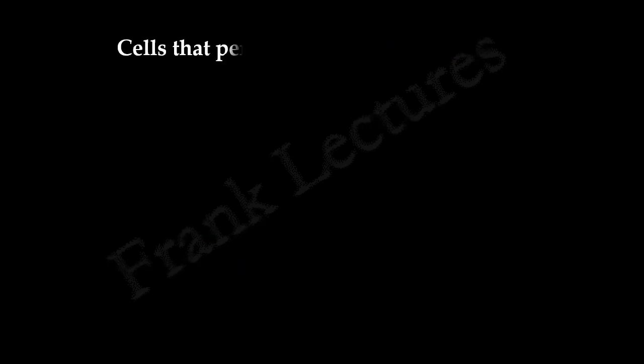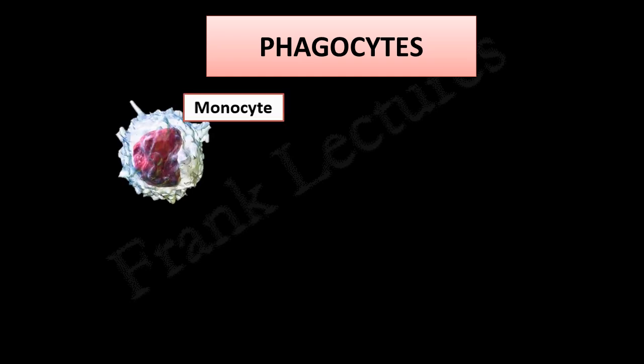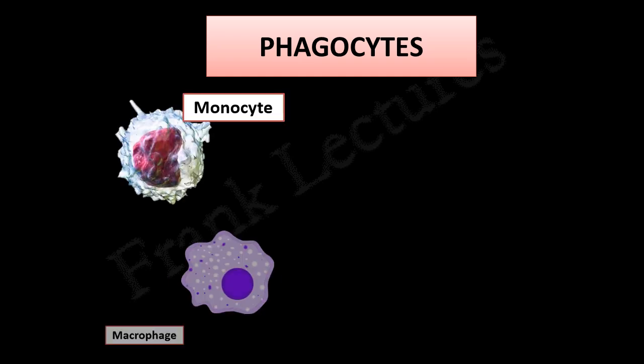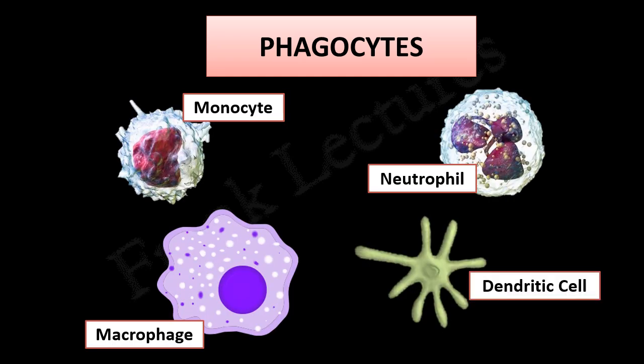The cells that perform phagocytosis are known as phagocytes. The main types of phagocytes in the human immune system are monocytes, macrophages, neutrophils, and dendritic cells. The main function of these phagocytes is to destroy the engulfed pathogen.